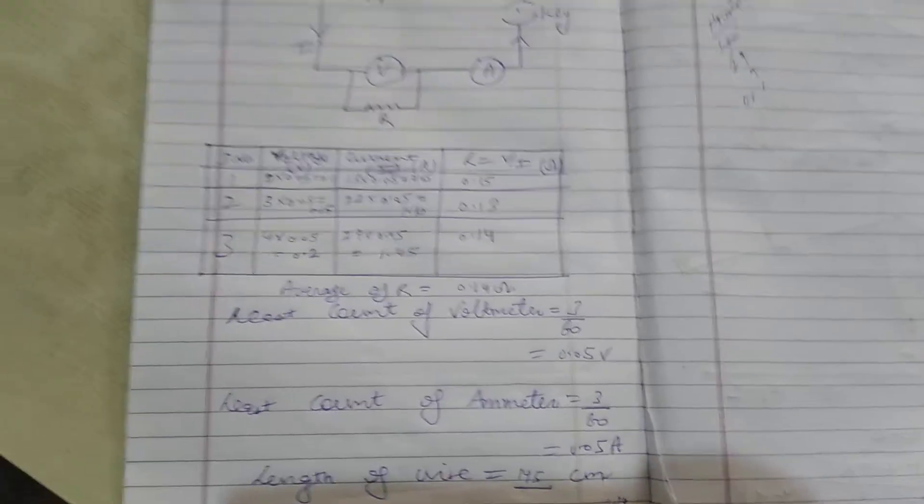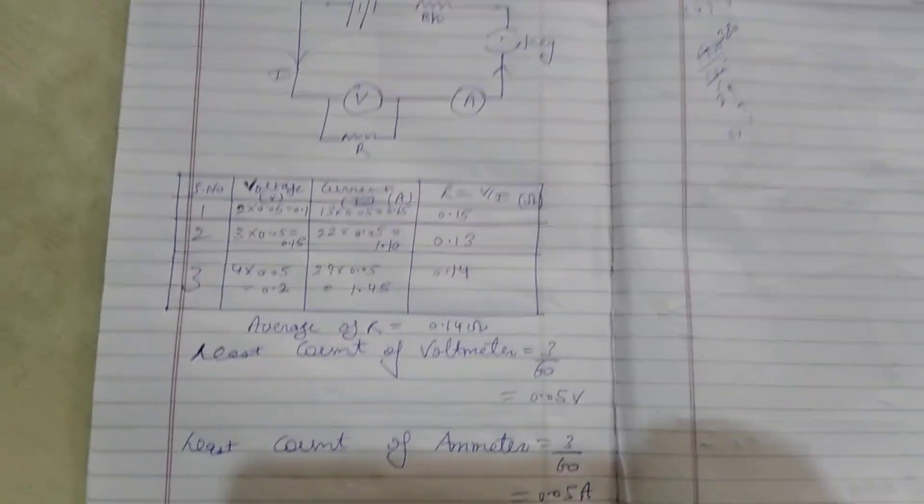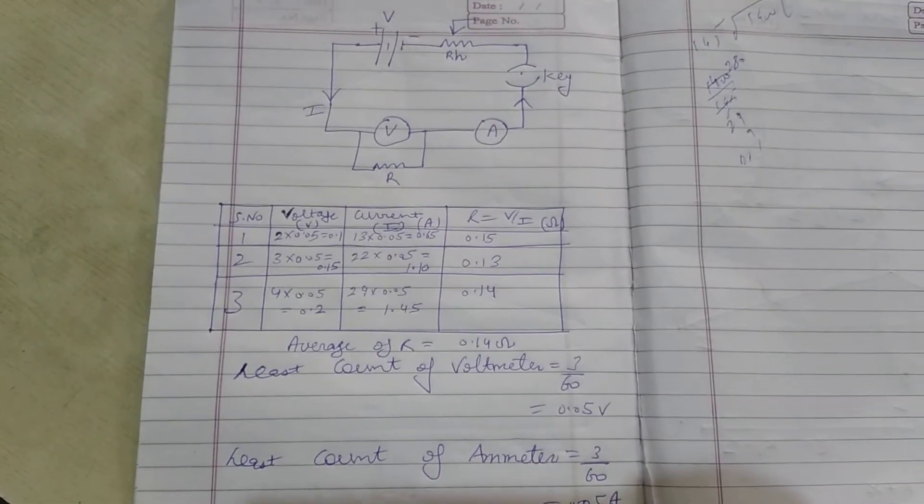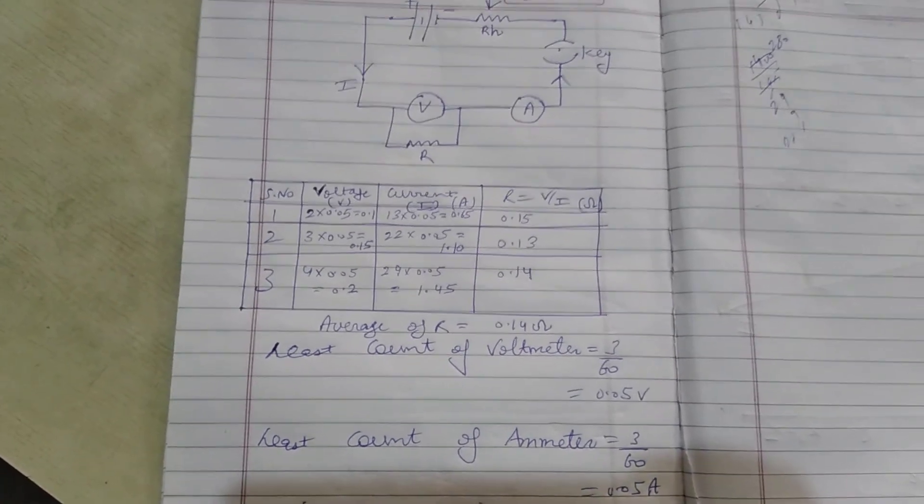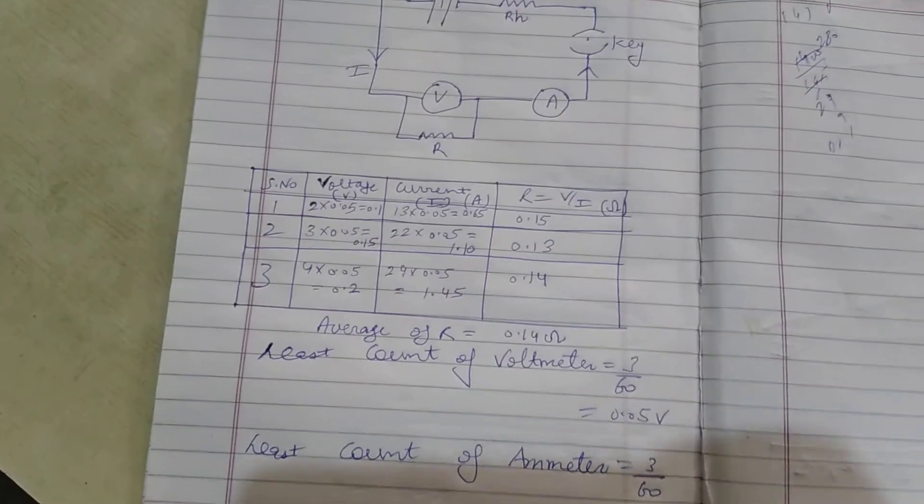So this is how we find the resistance per unit length using Ohm's law. I hope this is clear to you all. In case you still have any doubt, please comment in my comment section. Thank you.